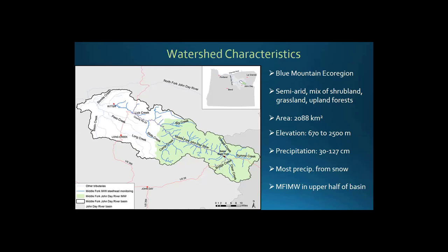Just an overview of the watershed — this is a semi-arid area. You saw some pictures of the nearby watersheds of Soton and Bridge Creek. The Middle Fork John Day is a little higher elevation than those and gets a little more precipitation. A fair amount of that precipitation is snowmelt, but it's not real high elevation so that snow doesn't last well into the summer. Discharge in the basin does go down significantly in June and July. The IMW itself is the green portion here in the upper end of the Middle Fork watershed.